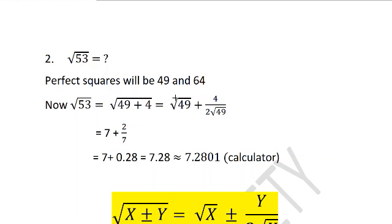Now this is 7, canceling this 4 with this 2 in the numerator I will get 2, and √49 is 7. 2 by 7 is 0.28. 7 plus 0.28 is 7.28, which is approximately equal to the value I got with calculator.